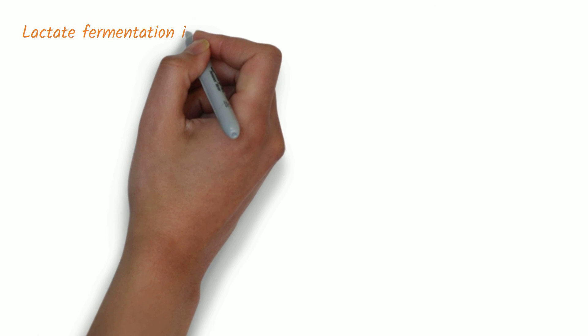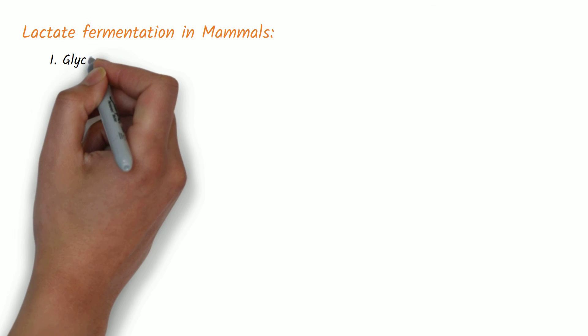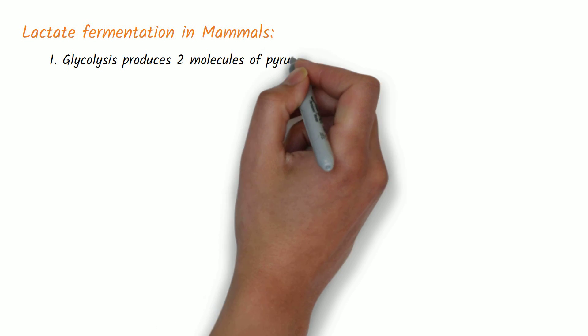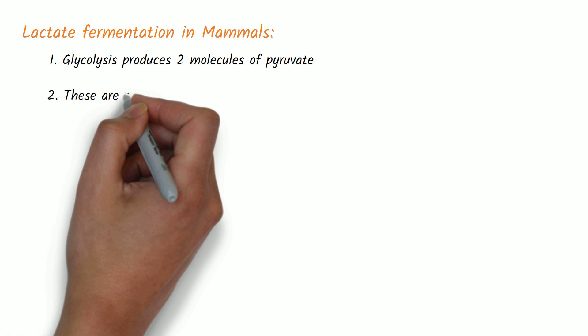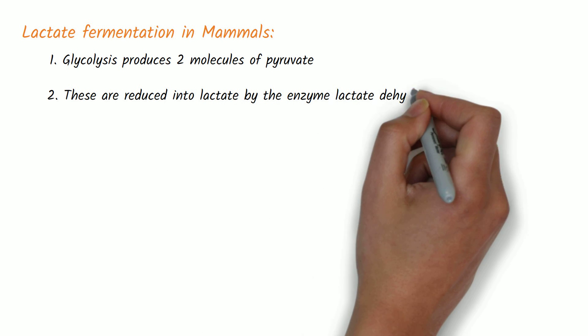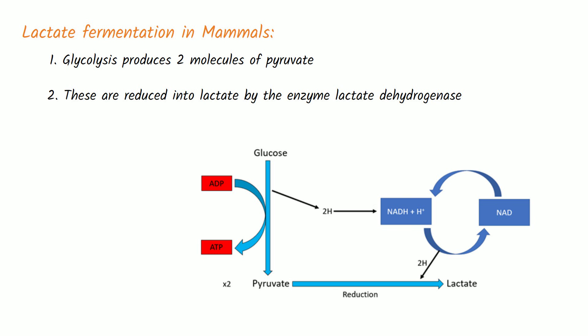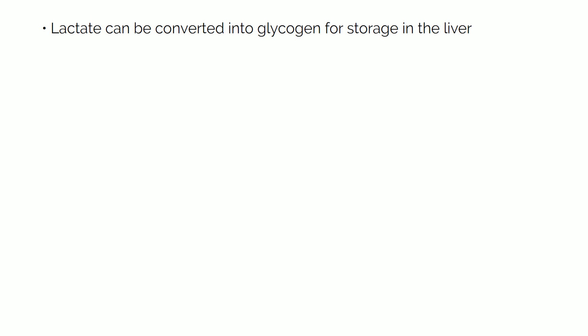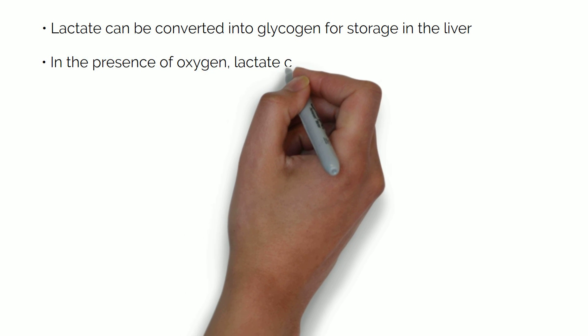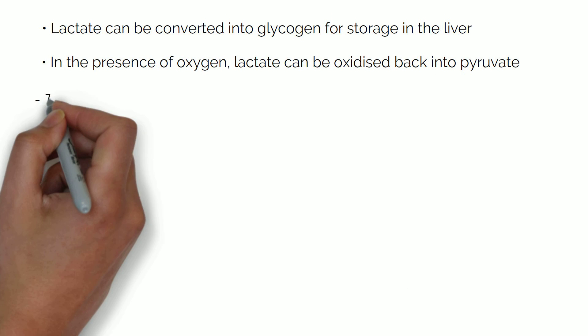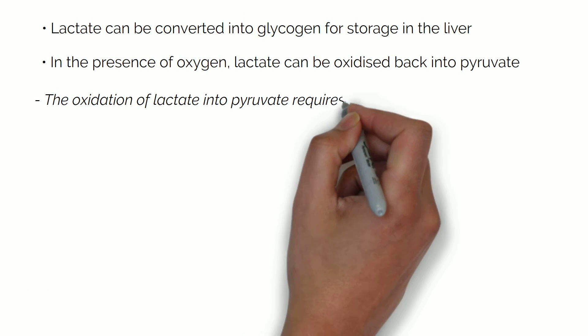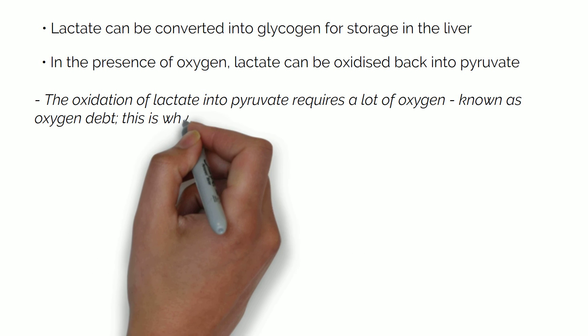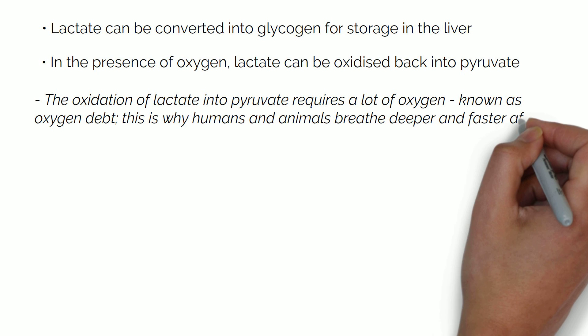In mammals, this process is called lactate fermentation. First, glycolysis produces two molecules of pyruvate. Second, pyruvate is reduced into lactate by the enzyme lactate dehydrogenase. Lactate can be further metabolised by the body; for example, lactate can be converted into glycogen for storage in the liver. In the presence of oxygen, lactate can be oxidised back into pyruvate. The oxidation of lactate into pyruvate requires a lot of oxygen, which is known as oxygen debt, and therefore humans and animals breathe deeper and faster after exercise.